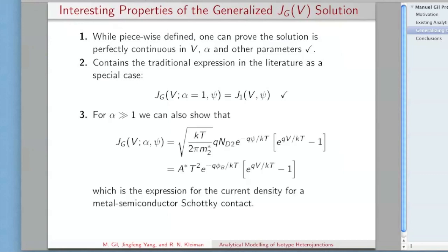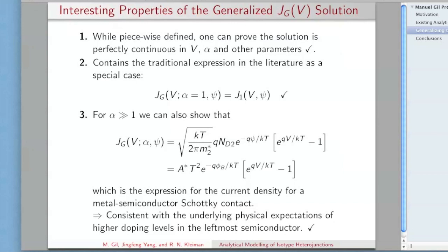More interestingly, if you think of alpha going to infinity, you could show that the expression becomes this, which you can rewrite in the second form. That is exactly the expression that you'd see for the current density from metal semiconductor Schottky contact. These new expressions are actually allowing you to interpolate anywhere from the original case that I showed you from the literature all the way to these semiconductor Schottky contacts. It's very consistent with the physics you should expect from having high levels of alpha, because essentially that's when your leftmost semiconductor starts to have higher and higher dopings, and the band diagram looks exactly like the band diagram that you would assume for these other contacts.